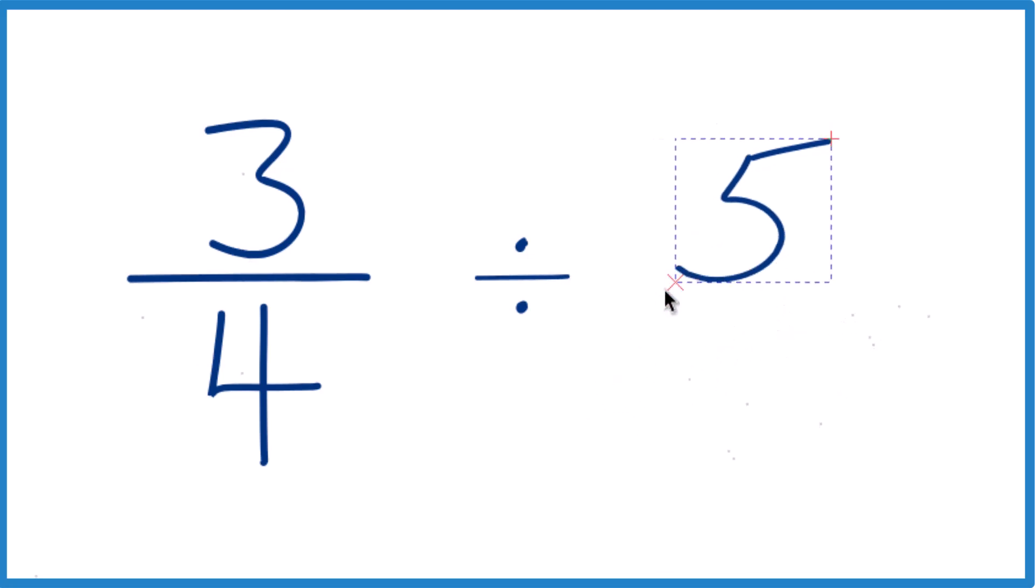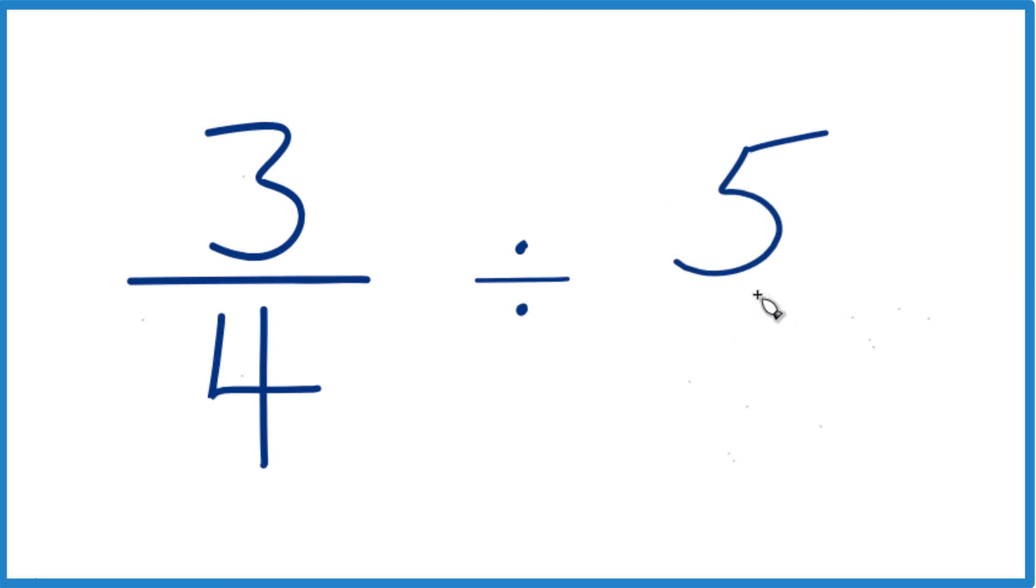Let's take the 5 here. Let's call this 5 over 1, because 5 divided by 1, that's still 5, just now that everything lines up nicely.